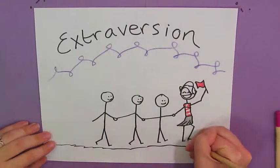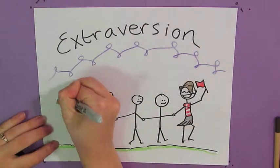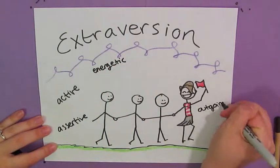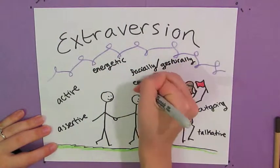People who are extroverted tend to be active, assertive, energetic, outgoing, talkative, and facially and gesturally expressive.